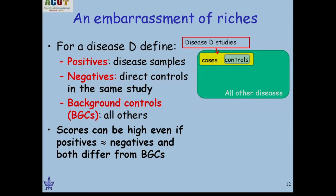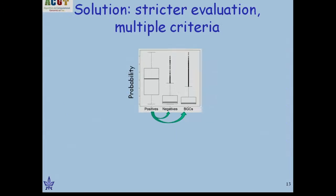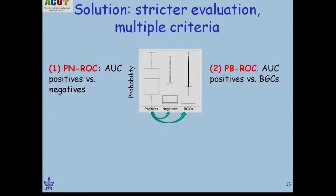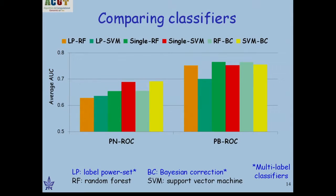To drive this point home: if you have 500 positives, 500 identically distributed negatives, and 10,000 background controls, you will get amazingly good curves that are totally meaningless. The solution is to come up with a positive-versus-negative score and a positive-versus-background score, so the positives are different from both. On top of that, we compute a Q-value by study-based meta-analysis, and use all three scores for strict evaluation.